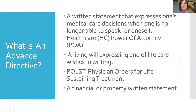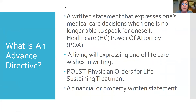So what is an advanced directive? It's a written statement that expresses one's medical care decisions when one is no longer able to speak for oneself. That's called the healthcare power of attorney. Another one is a living will, expressing end-of-life care wishes in writing. Then there's the POLST — Physician Orders for Life Sustaining Treatment — which used to be known as a DNR, do not resuscitate form. And then there's also a financial or property written statement.